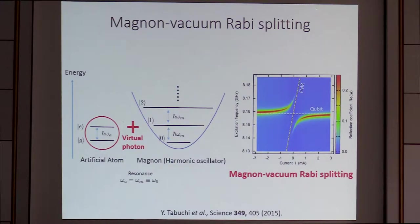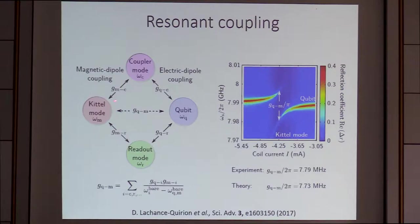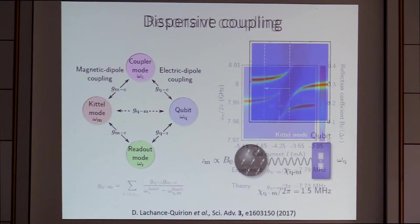This is the resonance case. The coupling between the qubit and the magnons can be evaluated by this energy splitting — it's about 8 MHz. If we look at the model, we have the Kittel mode and the qubit with two different cavity modes, and we know all the coupling strengths. From this, theoretically we can get this value, which is fairly close.